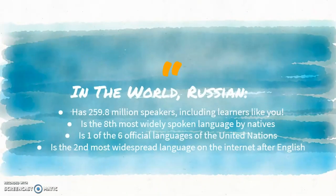In the world, Russian has 260 million speakers, including learners like you, and is the eighth largest language just by native speakers. The United Nations, an international peace organization, has named it one of its six official languages. Finally, even if you can't travel to areas where Russian is spoken the most, Russian is everywhere on the internet — it's the second most widespread language there.